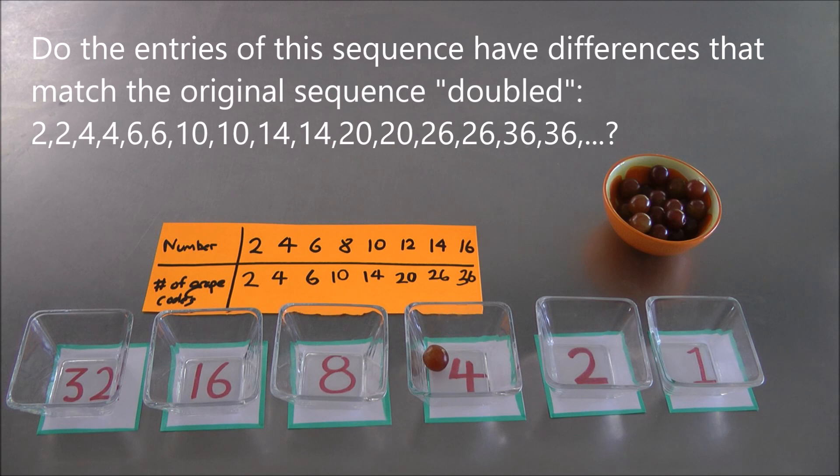Is that pattern that we've just noticed an actual true pattern or does it eventually break down and it's just a coincidence for these first few numbers we have? Great stuff.